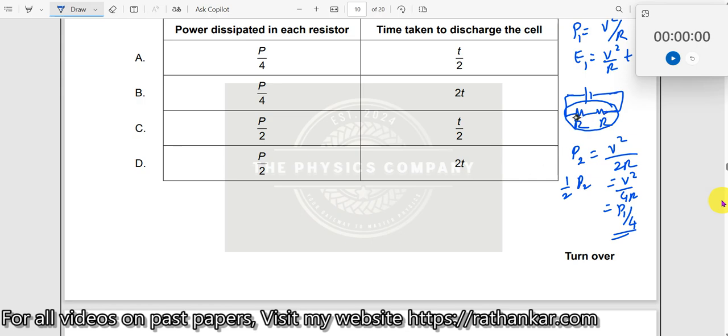So this will be P by 4, this will be P by 4, so total will be P by 2. That is what we get over here, will be P by 2. So therefore, these two are incorrect, it could be between A and B.